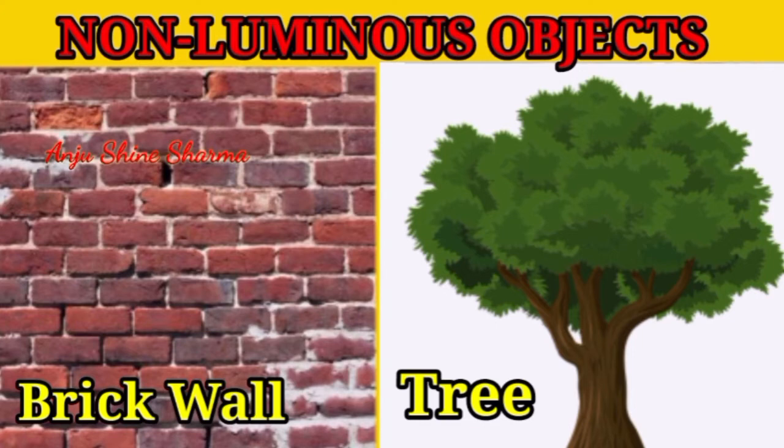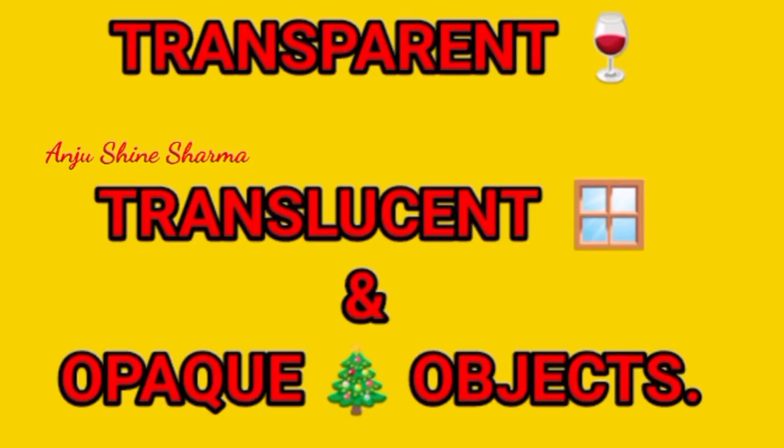Examples of non-luminous objects are: table, chair, paper, pencil, plants, animals. Transparent, translucent and opaque objects.